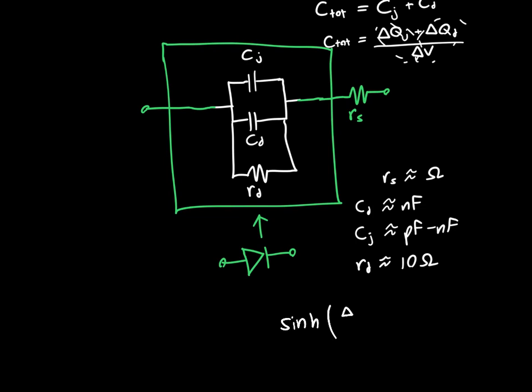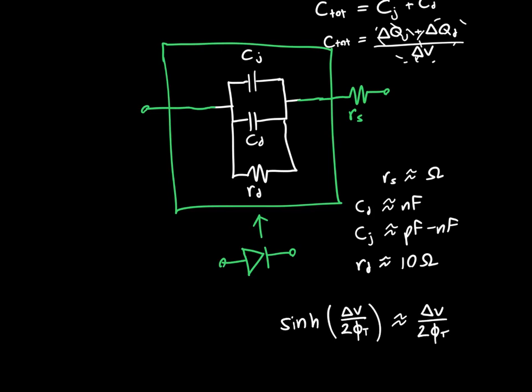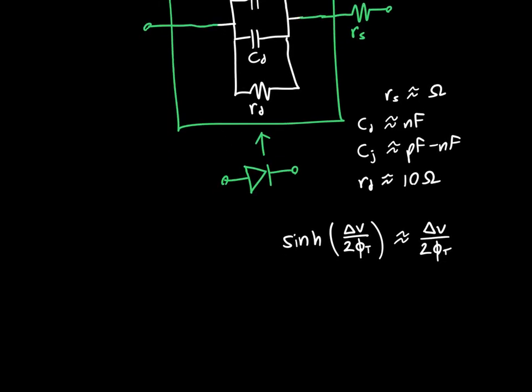So sinh of delta V over two phi T must be approximately delta V over two phi T. And for that to be true, delta V had to be much, much less than two phi T.